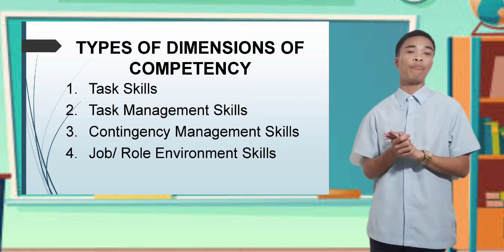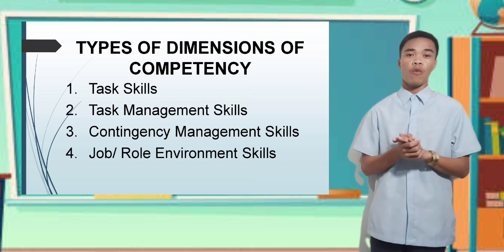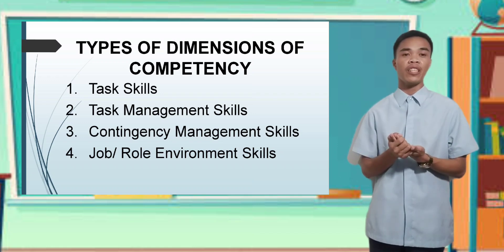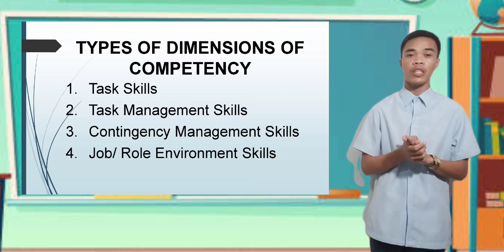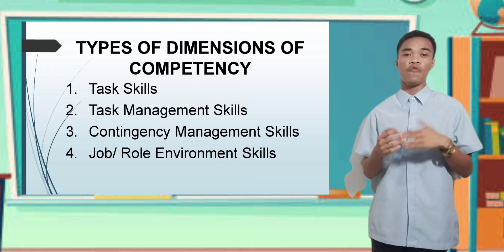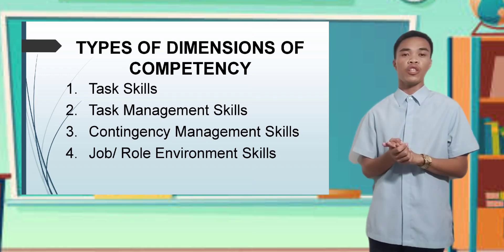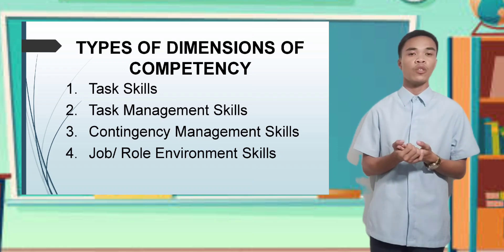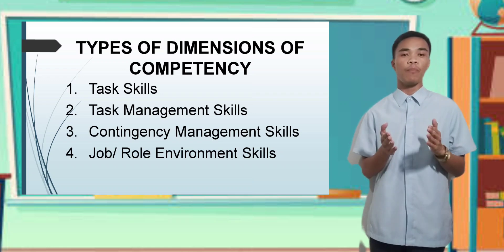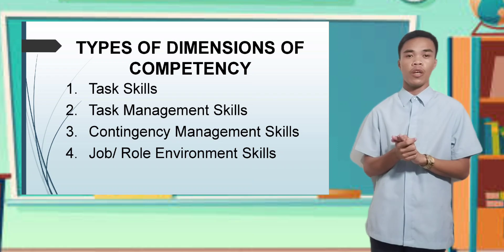Finally, the fourth type is job role and environment skills, which involves being able to navigate the responsibilities and expectations of the work environment, such as working with others, interacting with clients and suppliers, and following company policies and procedures.